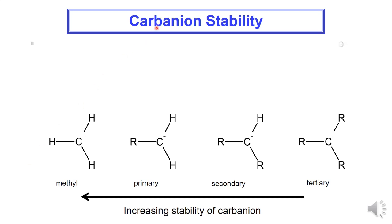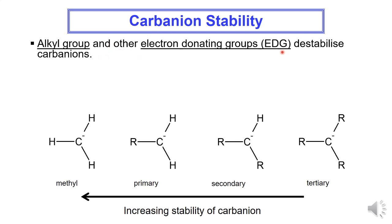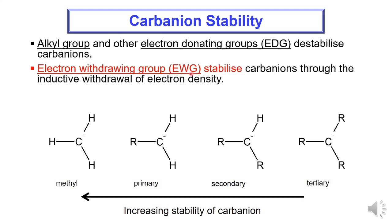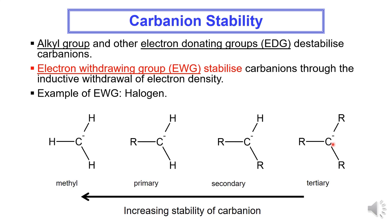Carbanion stability: Alkyl groups and other electron-donating groups (EDG) destabilize carbanions. However, electron-withdrawing groups (EWG) stabilize carbanions through inductive withdrawal of electron density — for example, halogens. Based on the arrangement, stability of carbanions increases from tertiary to methyl carbanion. The least stable carbanion has three alkyl groups attached (destabilized by EDG), and the most stable carbanion is the methyl carbanion because it has no alkyl groups attached.